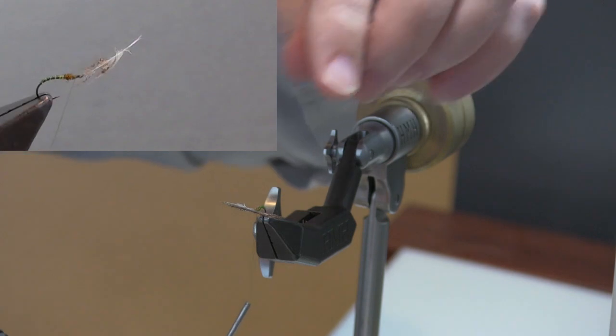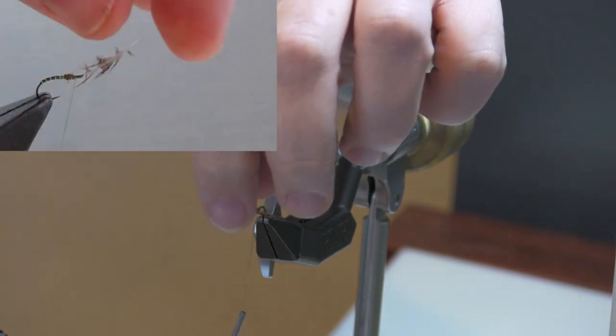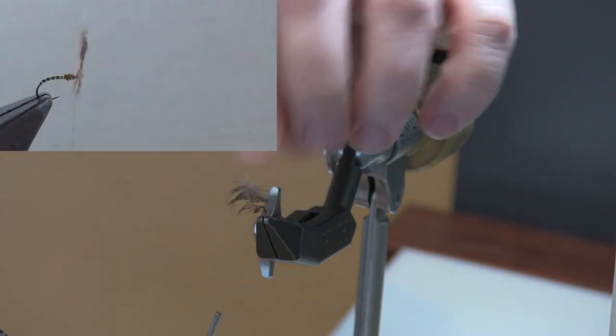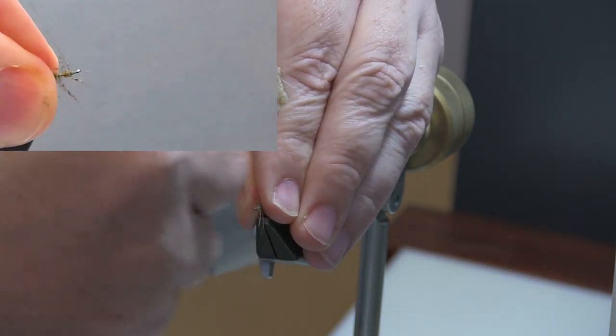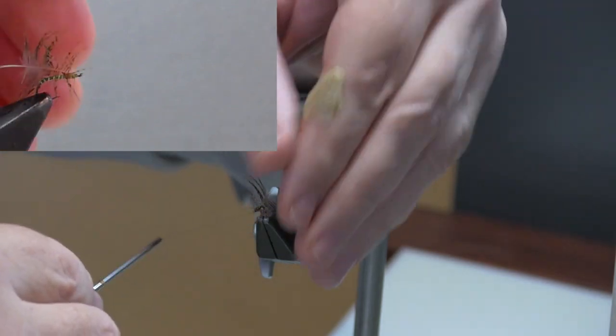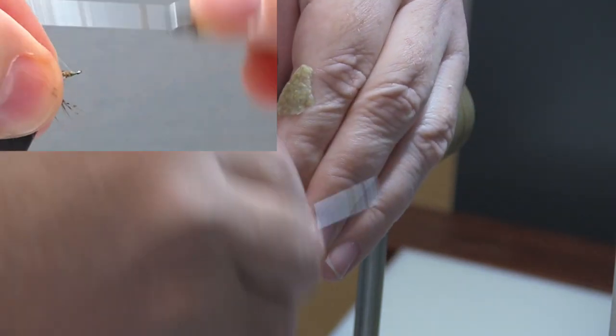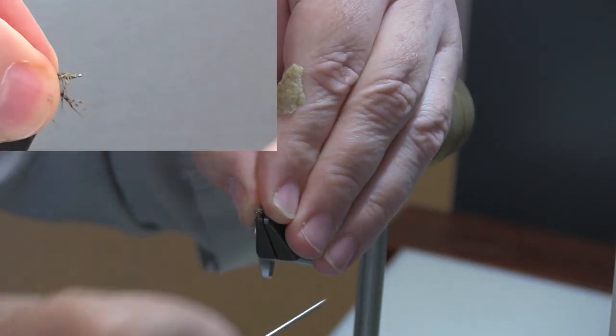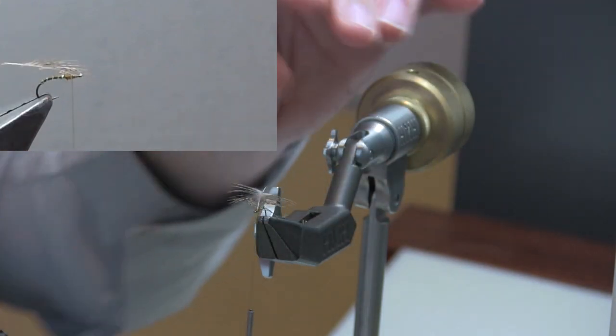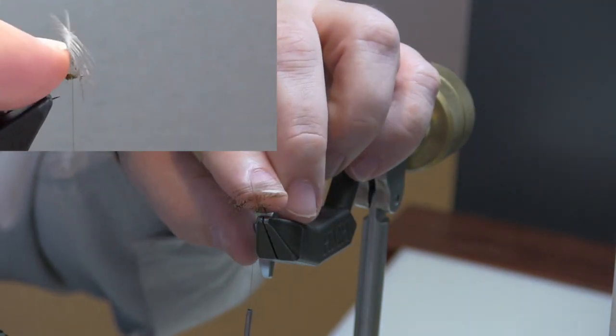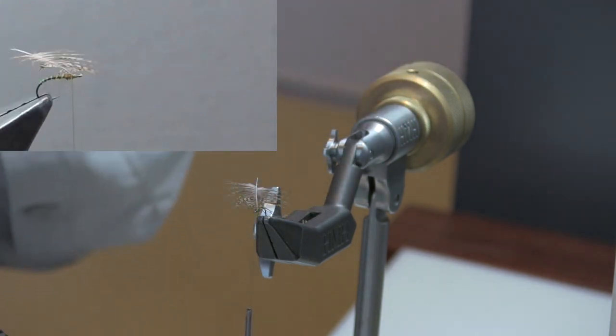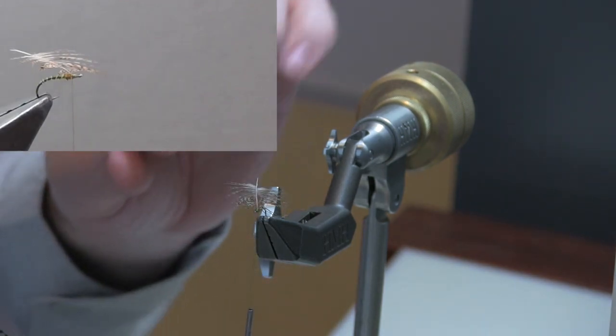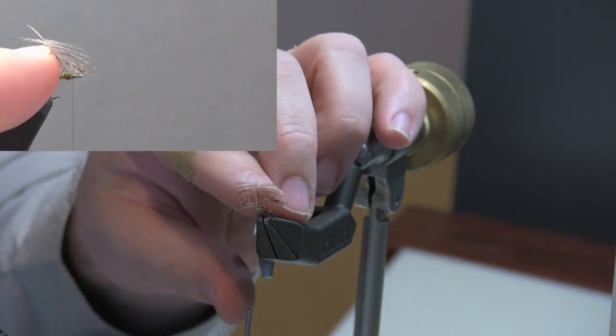I'm going to take one turn towards the hook eye, and then I'm going to draw the partridge feather back, and I'm going to wind back over it with a couple of turns of thread. What I've done is, by tying it in in a forward direction, and then pulling it over and tying it back, is I have made sure that the feather won't pull out when I go ahead and start to wrap the hackle.